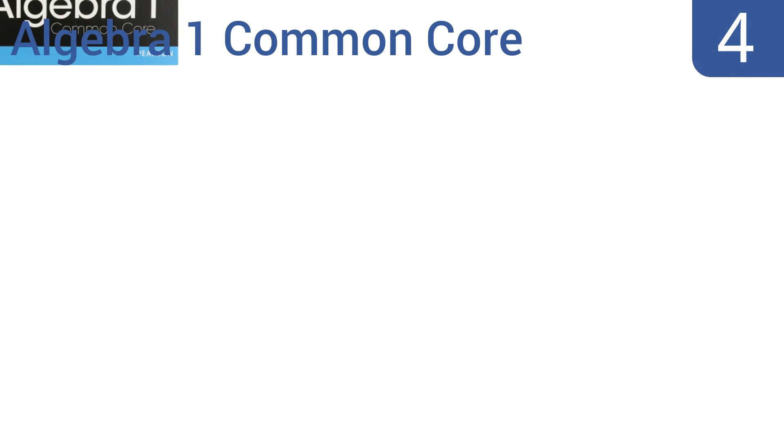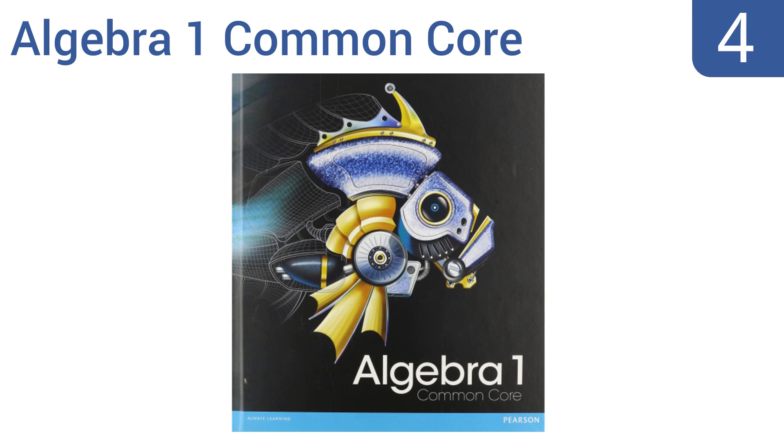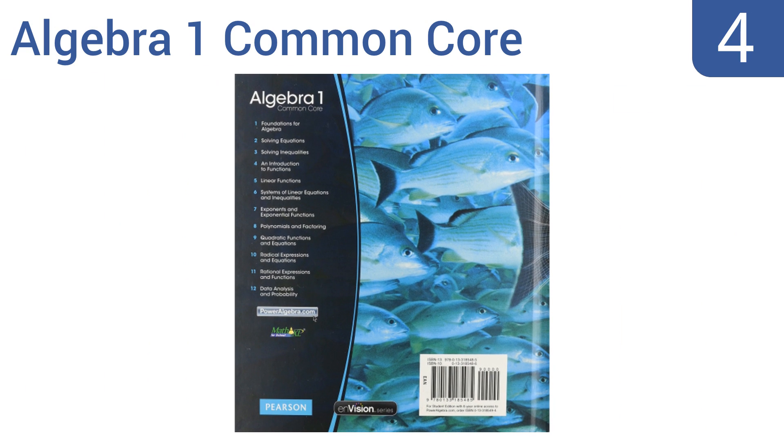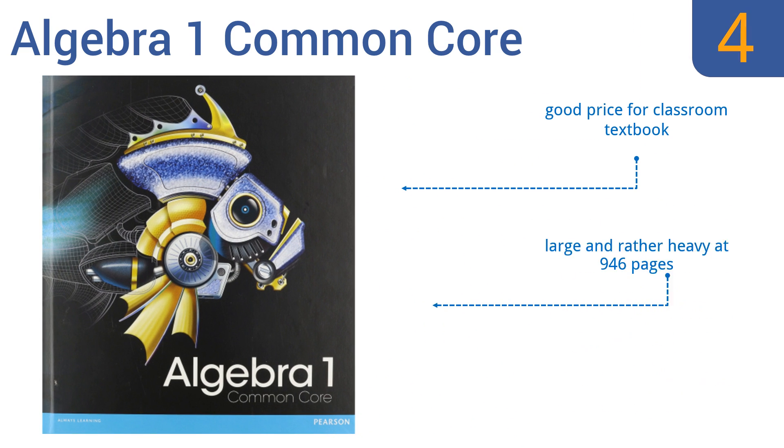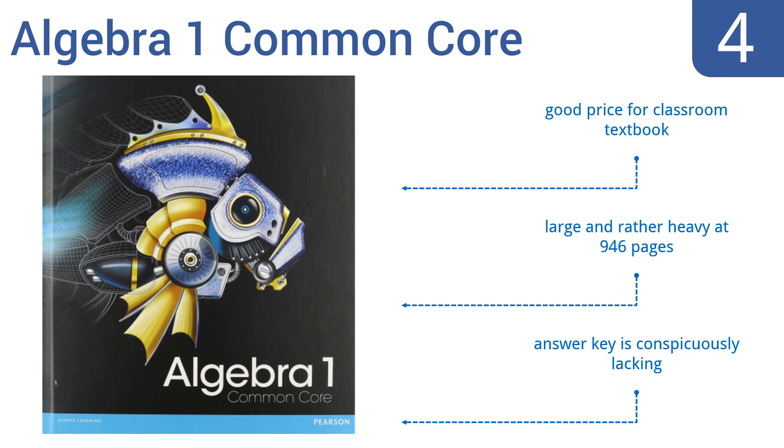At number 4, the Algebra 1 Common Core Student Edition textbook is rapidly catching on as a must-have teaching tool for countless classrooms around America, as this new set of standards becomes more widely accepted. It covers crucial topics like linear function, probability, and more. It's a good price for a classroom textbook.